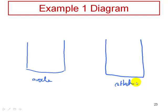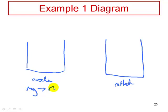In the anode compartment, the half-reaction that happens is: magnesium gets oxidized — Mg → Mg²⁺ plus two electrons. At the cathode, the aluminum reduction half-reaction occurs.